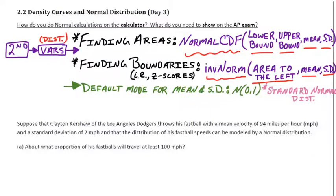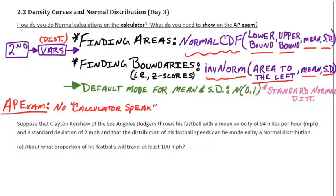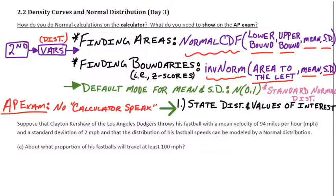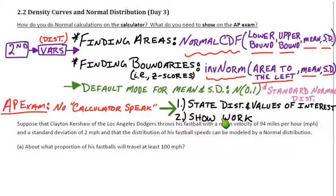For the AP exam, avoid calculator speak — don't just say 'I typed in normalcdf and got an answer.' You need three things: state the distribution and values of interest (it's normal, here's the mean and standard deviation), show your work by shading a curve and illustrating the region, and give an answer in context of the problem.